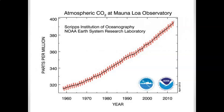Even small changes in the amount of greenhouse gases in the atmosphere can have large consequences. This graphic charts the amount of carbon dioxide in the atmosphere in parts per million. There's variation between summer and winter, which is why the graph goes up and down, but if you follow the trend line since the 1960s — over the last 60 years — that line is continuing to increase more and more every decade.